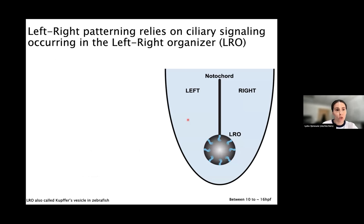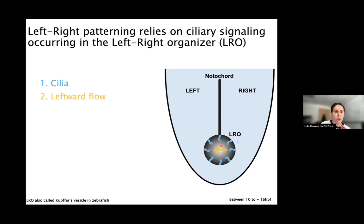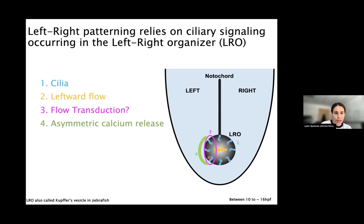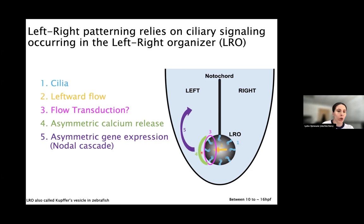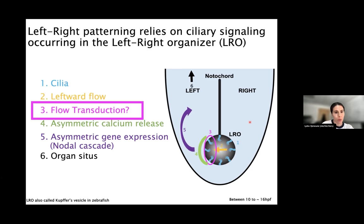It's called Hensen's node in the chick, or Kupffer's vesicle in zebrafish. Here's a brief overview of the main steps that take place to break the initial left-right symmetry. The first step is the formation of cilia in the structure; cilia will beat to generate a leftward flow. This flow will be transduced on the left side, ultimately leading to a release of calcium on the left side, translated into a cascade of gene expression called the nodal cascade, which leads to proper organ situs. There are still gaps in this model, especially regarding how the flow is transduced, and understanding this has been the main focus of my work.